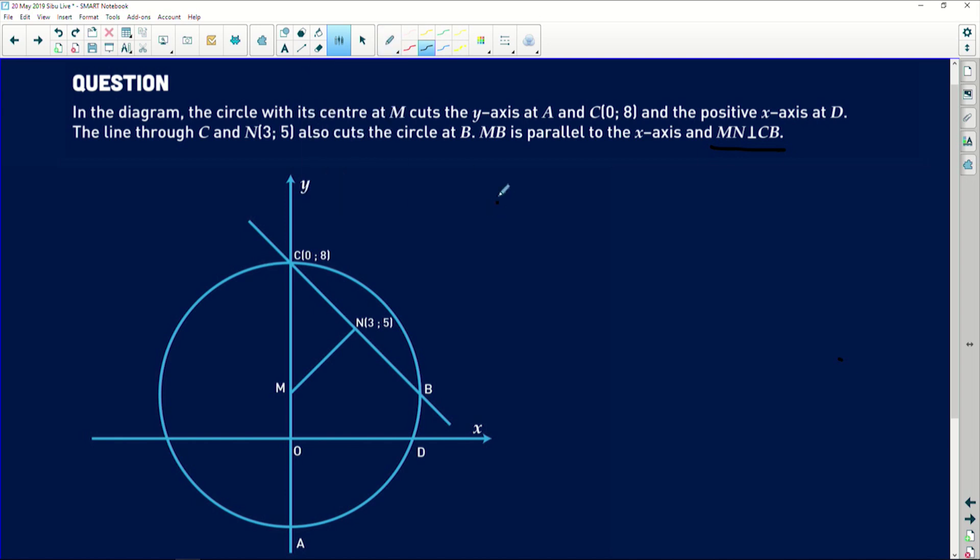Let me change my pen. We're using a white pen. The line MN is actually perpendicular to CB, so MN is perpendicular to CB. I'm going to put the 90 degree angle there. We need that; it's going to help us a lot when continuing with our analysis.